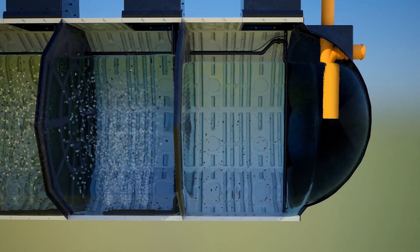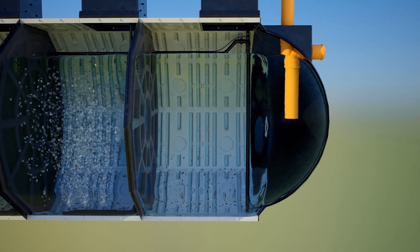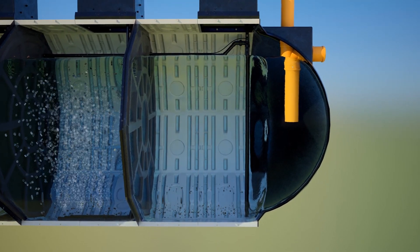Treated water then flows into the final settlement chamber. Any remaining solids fall to the bottom of the final tank and are transferred back to the primary settlement chamber via the sludge return.